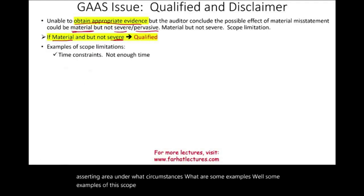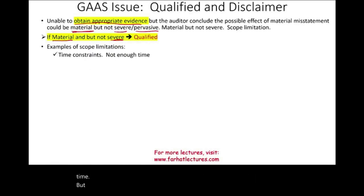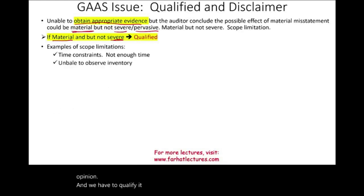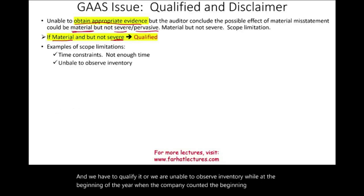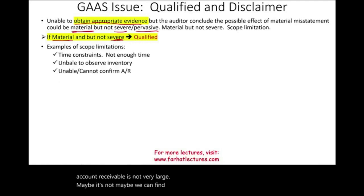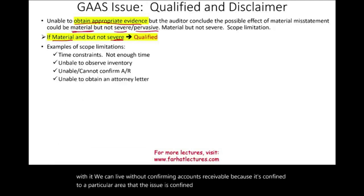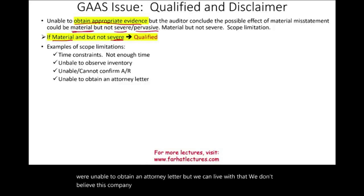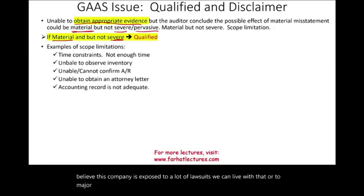Examples of scope limitations include: time constraints — we did not have enough time, but we believe we did enough work to give a qualified opinion. Or we were unable to observe inventory at the beginning of the year. We can live with their beginning inventory but we need to qualify. Maybe we were unable to confirm accounts receivable — if it's not very large, we may find alternative procedures and live without confirming it. Or we were unable to obtain an attorney letter, but we don't believe the company is exposed to major lawsuits. Accounting records may be inadequate — depending on circumstances, maybe we can live with that.